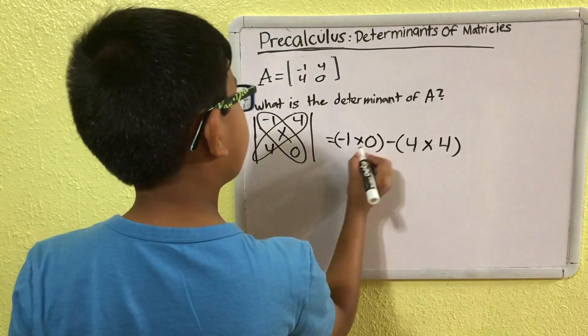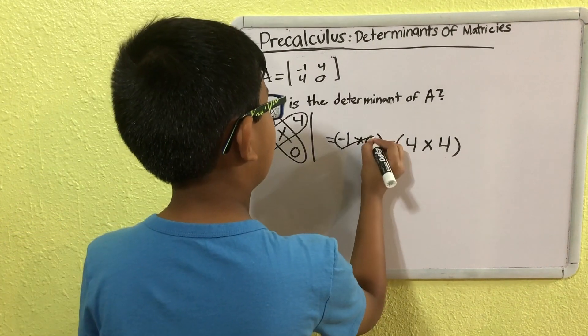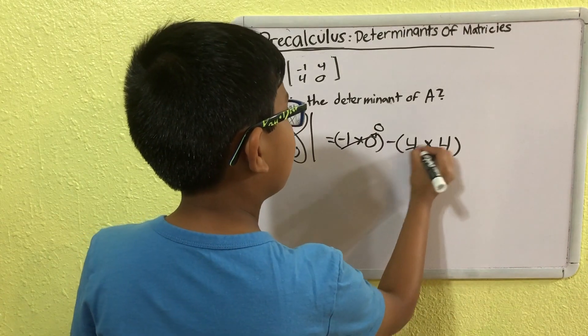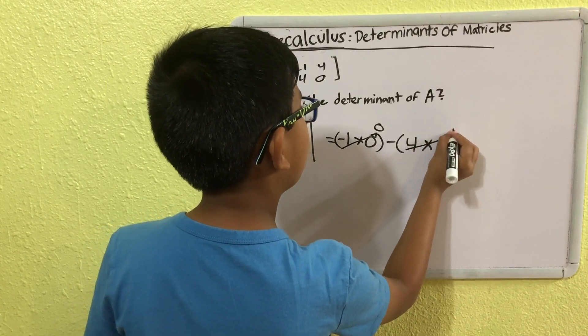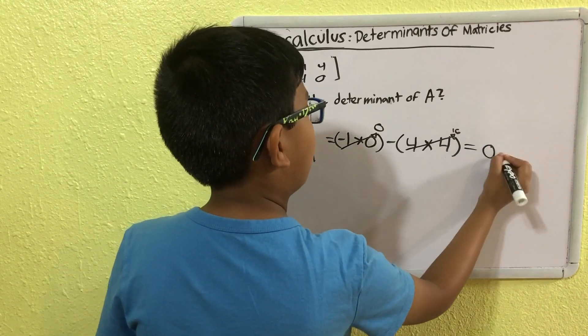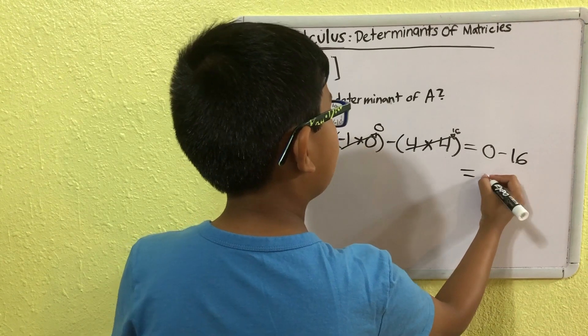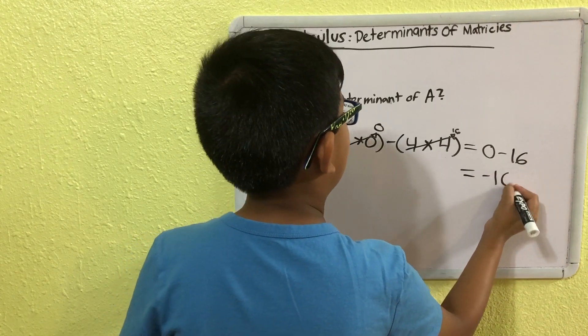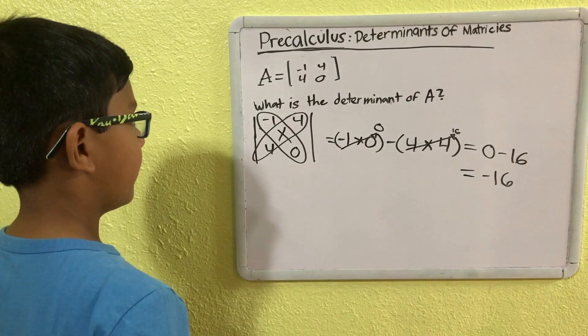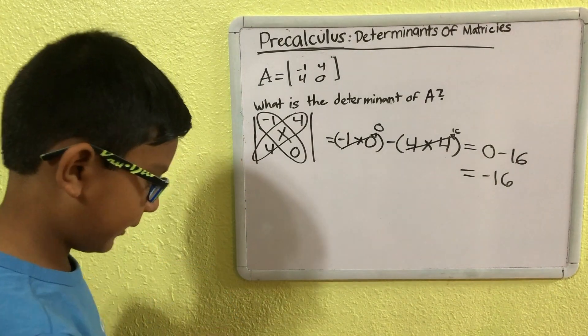And we know how to solve this. So, this just simplifies to 0, and then this simplifies to 16. This is equal to 0 minus 16, which you can already tell by now, is equal to minus 16. So, this is our answer. The determinant of matrix A is equal to minus 16.